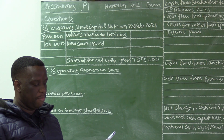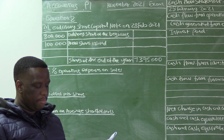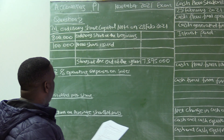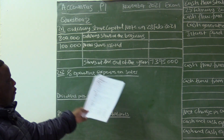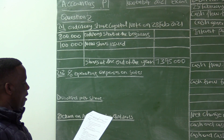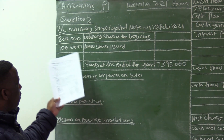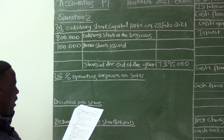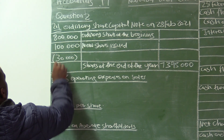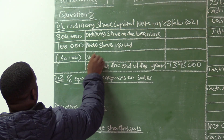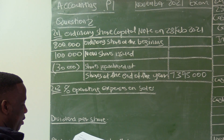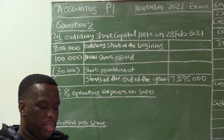The information relates to Brua Ltd for the financial year ending 28th February 2021. We need to prepare the ordinary share capital note — that's worth 6 marks. The information already filled in shows 800,000 ordinary shares at the beginning, then 100,000 new shares issued, and on 1 January, 30,000 shares were repurchased.